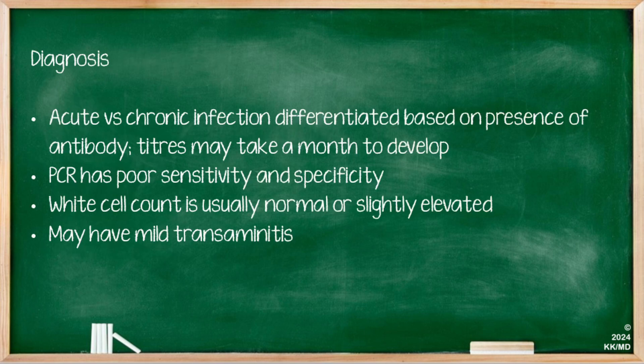The diagnosis of whether this is an acute or a chronic infection is differentiated based on the presence of antibodies, but it's important to remember that titers may take a month to develop. PCR has a relatively poor sensitivity and specificity, and the white cell count is usually normal or slightly elevated. Patients may have a mild transaminitis.